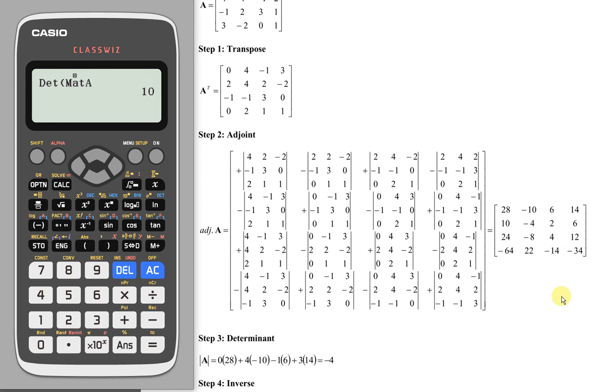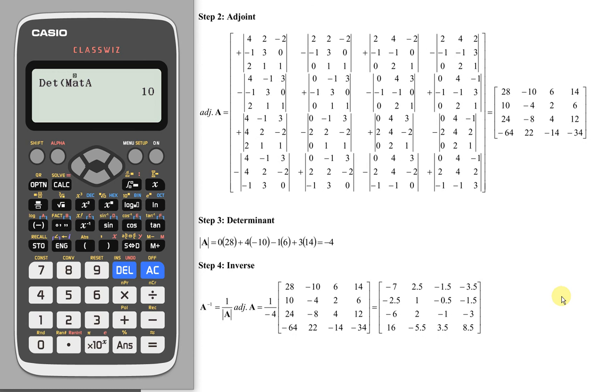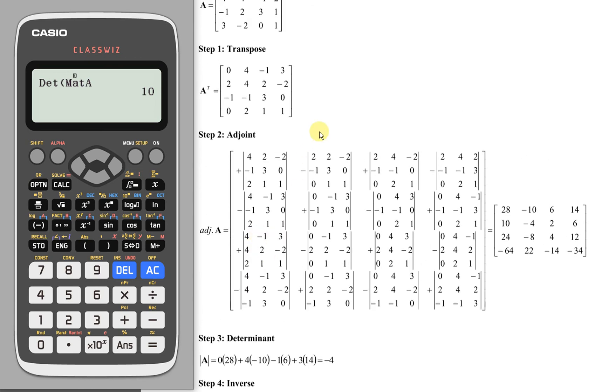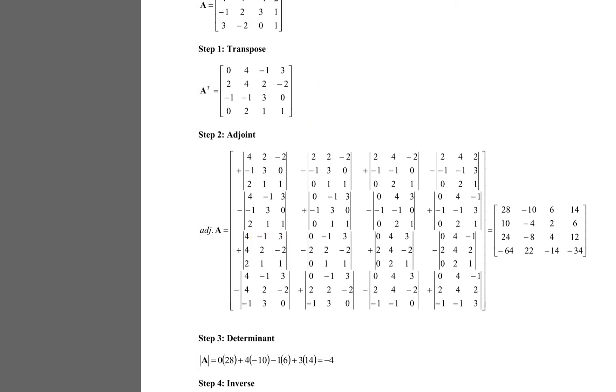Then we proceed to determine the determinant. To obtain the determinant, what I usually do here is I will refer to the first entry of the transpose and the first entry of the adjoint respectively. So 0 for the transpose, 28 for the adjoint.